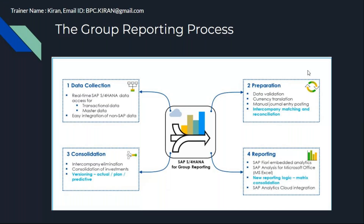Now, the group reporting process — what we are going to cover in this session. The total course is divided into four parts: first, data collection; second, preparation; third, consolidation; fourth, reporting. These are the four parts of group reporting, and any consolidation product is similarly structured.